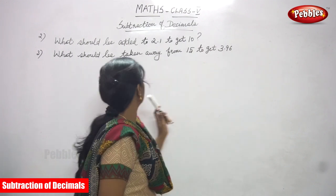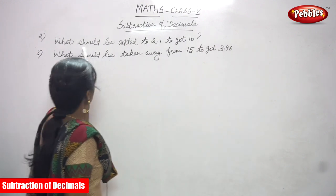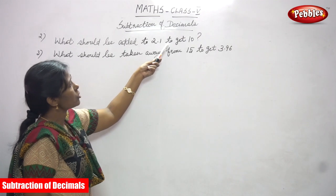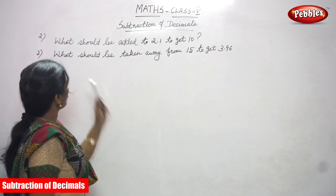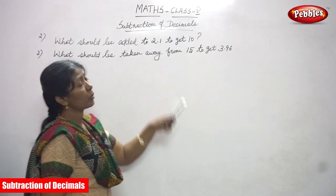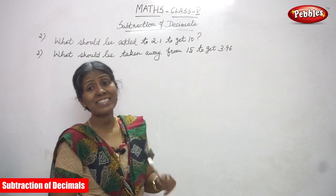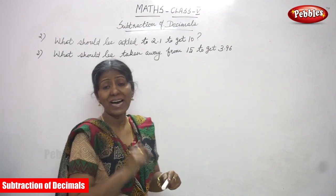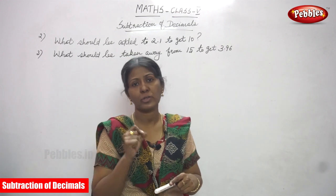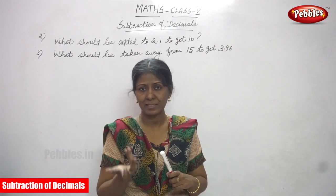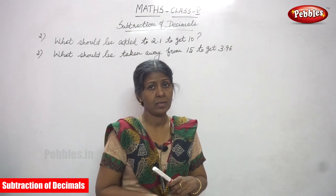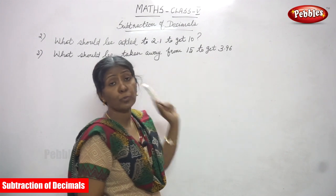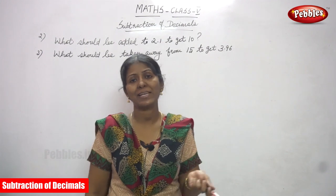Now, look at the sum. What should be added to 2.1 to get 10? That means, what is the number that is going to be added with 2.1 so that you will get the answer 10? So, what are you going to do first? You have to subtract 2.1 from 10 and you will get the answer.